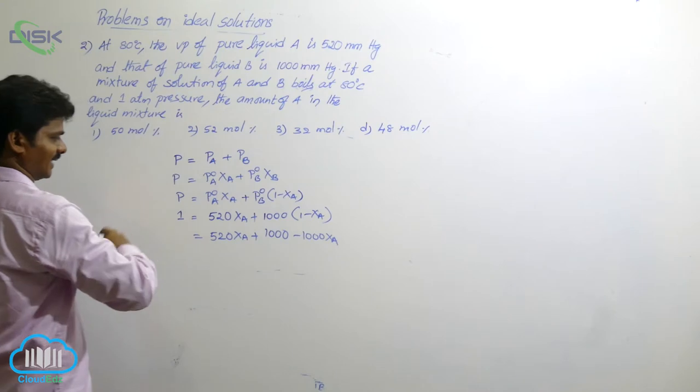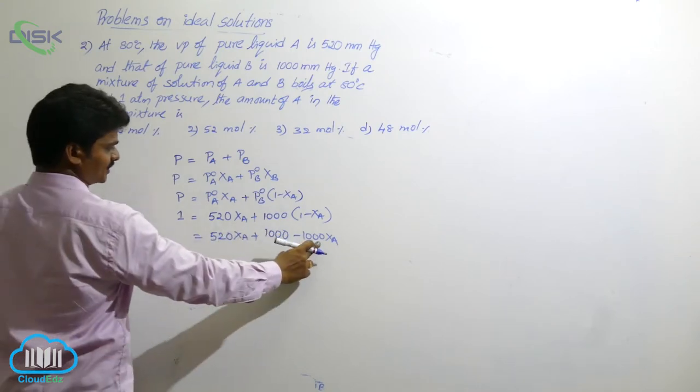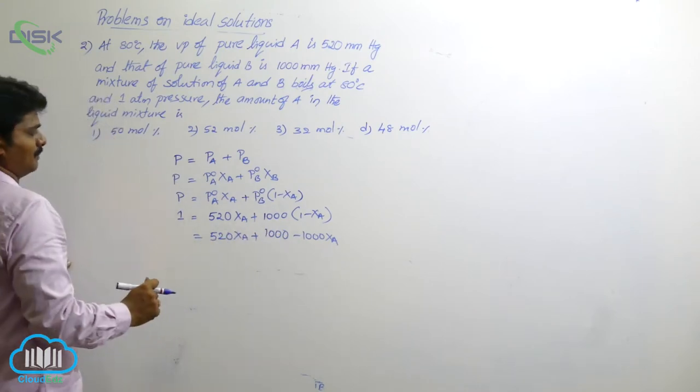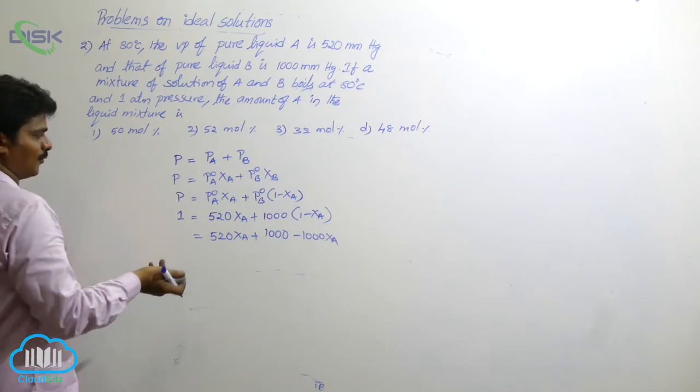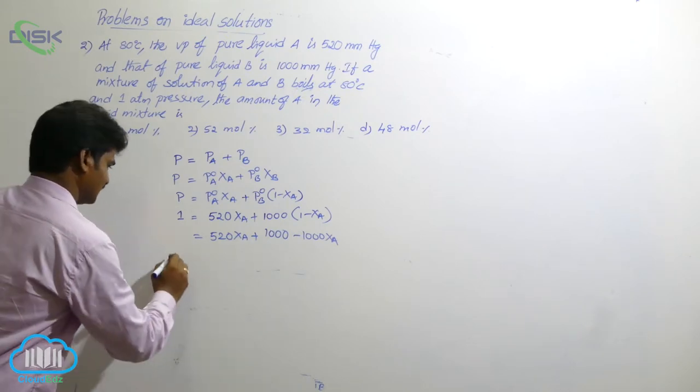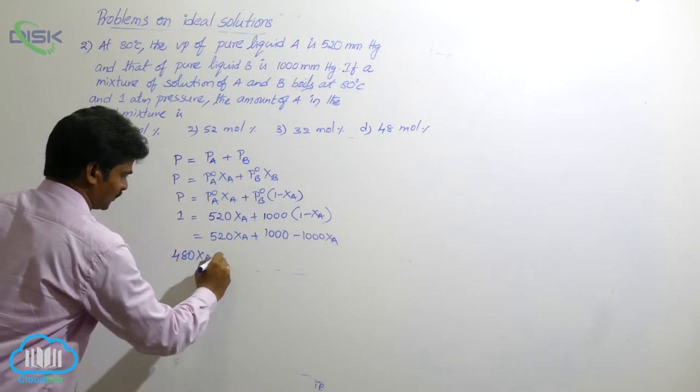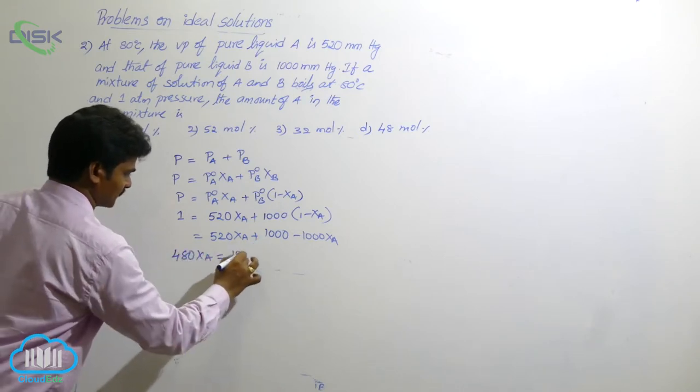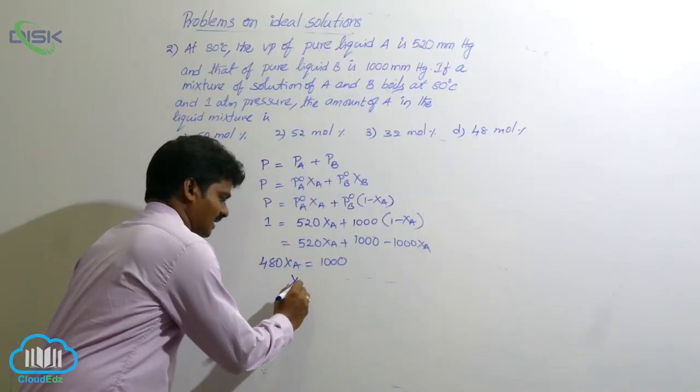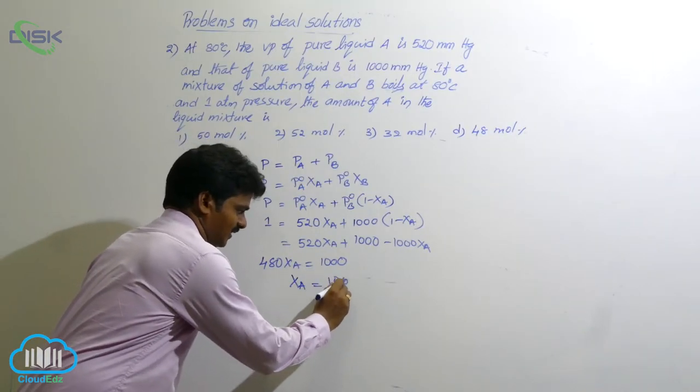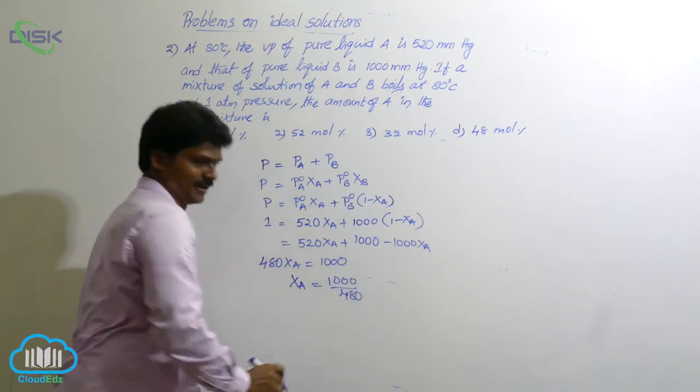Take 1000 xA to this side. So, minus 1000 plus 520 means negative 480 xA. That means 480 xA equals 1000. Then xA is equal to 1000 by 480.